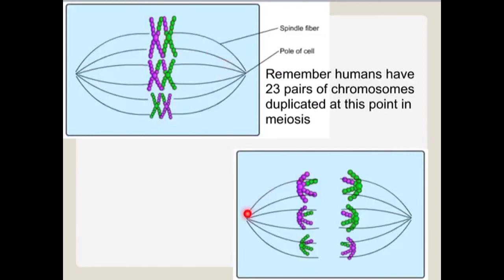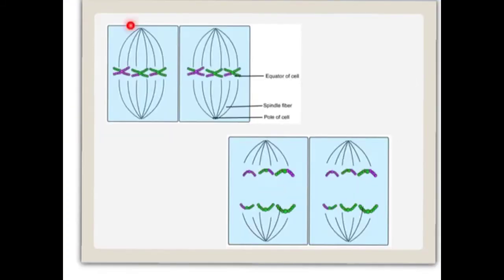The spindle fibers pull the chromosomes to opposite sides of the cell. The cell now divides into two daughter cells with 23 pairs of sister chromatids.